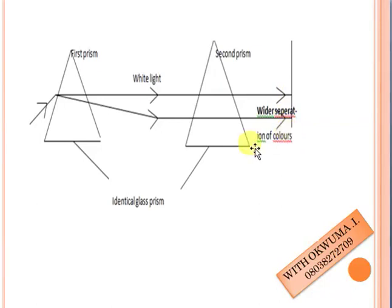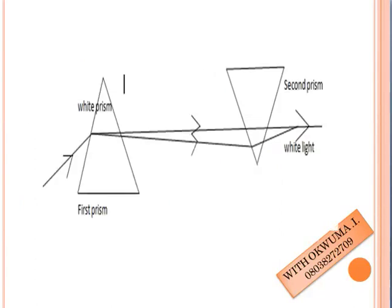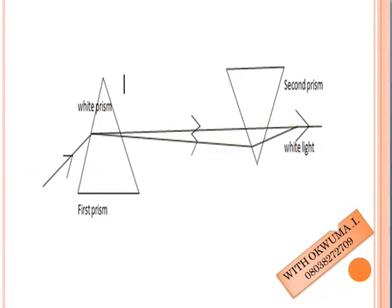In a situation whereby the second prism is inverted, the colors are seen to disappear, and only a patch of white light will be visible on the screen. The disappearance of the colors is as a result of their recombination to produce white light. The two prisms are identical; inverting the second prism causes the widely separated colors to recombine and produce white light again.